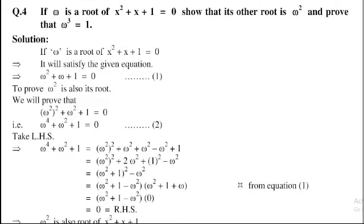To prove that omega square is also a root, we will prove that (omega²)² + omega² + 1 = 0, by replacing x with omega². So (omega²)² equals omega⁴, giving us omega⁴ + omega² + 1 = 0. This is equation number 2.